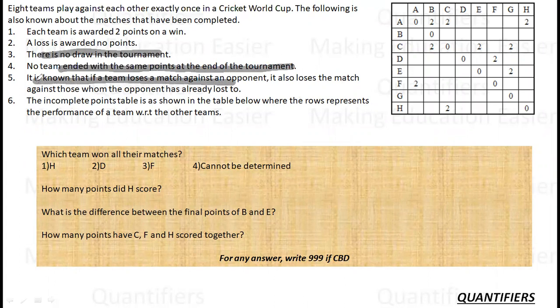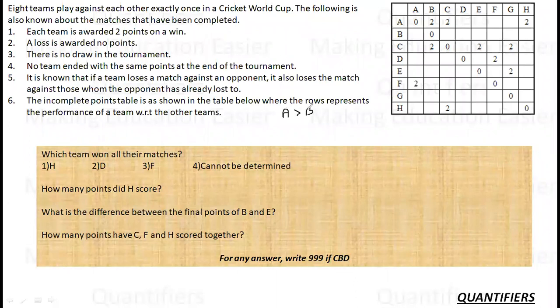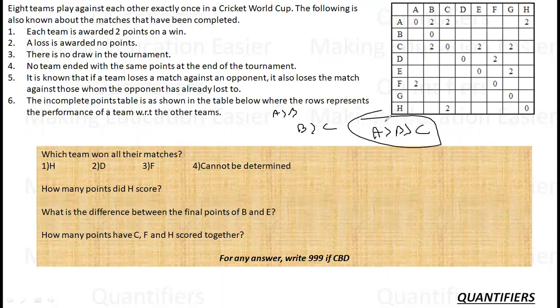It is known that if a team loses a match against an opponent, it also loses the match against those whom the opponent has already lost to. So, what does that mean? It simply means that let us say that A team has beaten B team. And then there is C team which has beaten A team. Then it automatically means that since B lost to A, B will also lose to C. So, if you are losing from an opponent and that opponent has already lost to someone else, you will also lose to that someone else. Basically, the transitive operation is a simple rule.